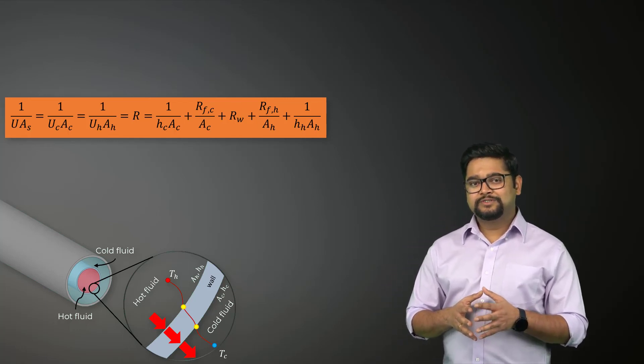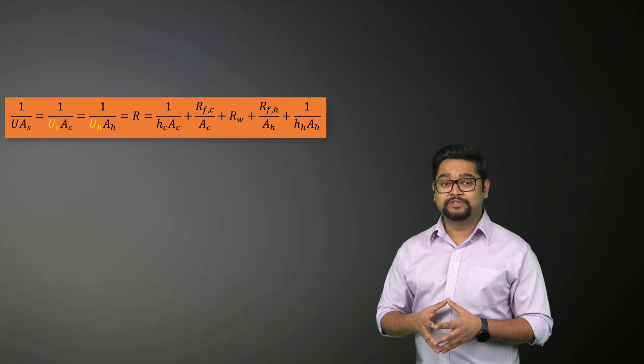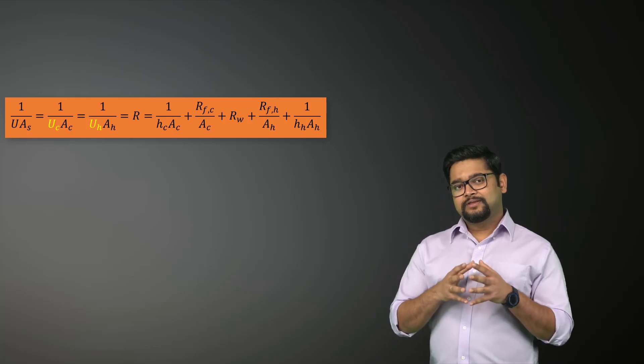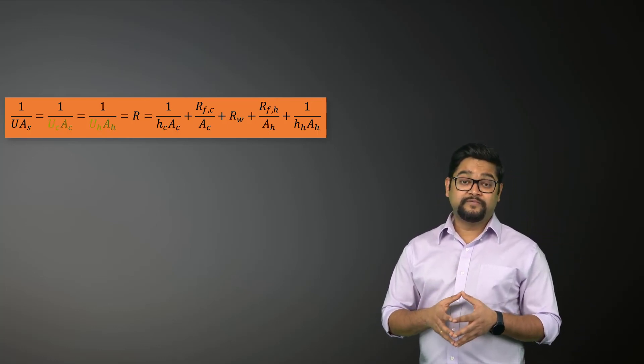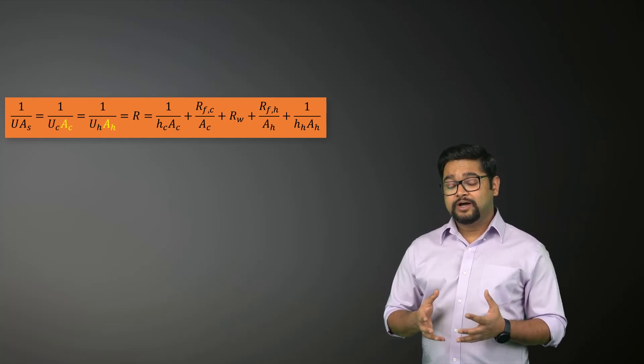Now, perhaps you are wondering why we have two overall heat transfer coefficients UC and UH for a heat exchanger. This is because every heat exchanger has two heat transfer surface areas AC and AH which in general are not equal.